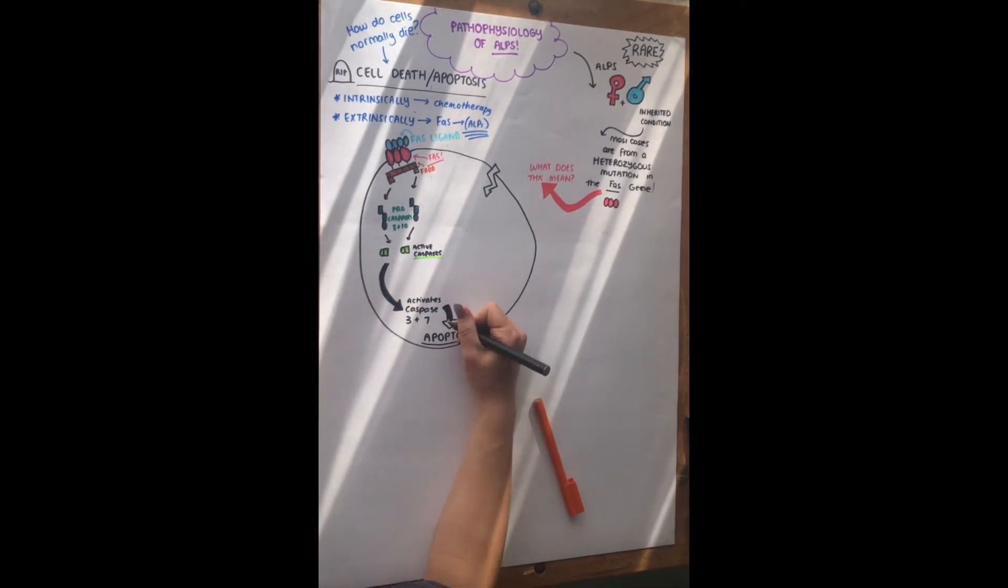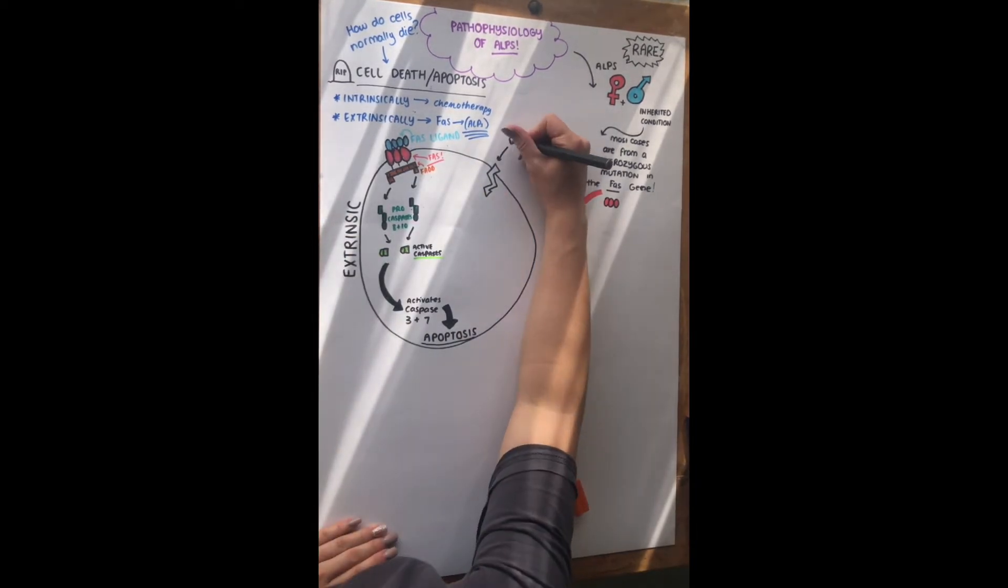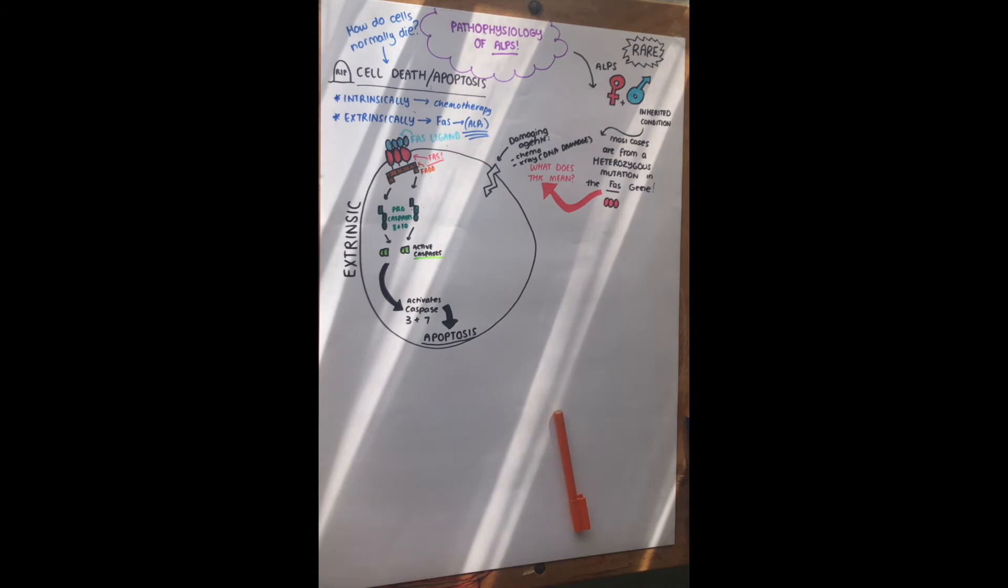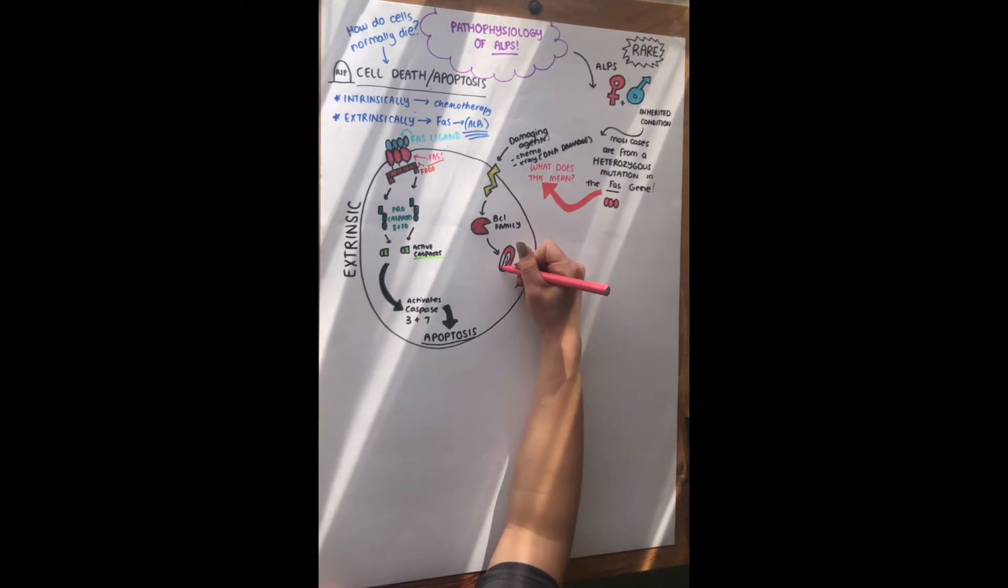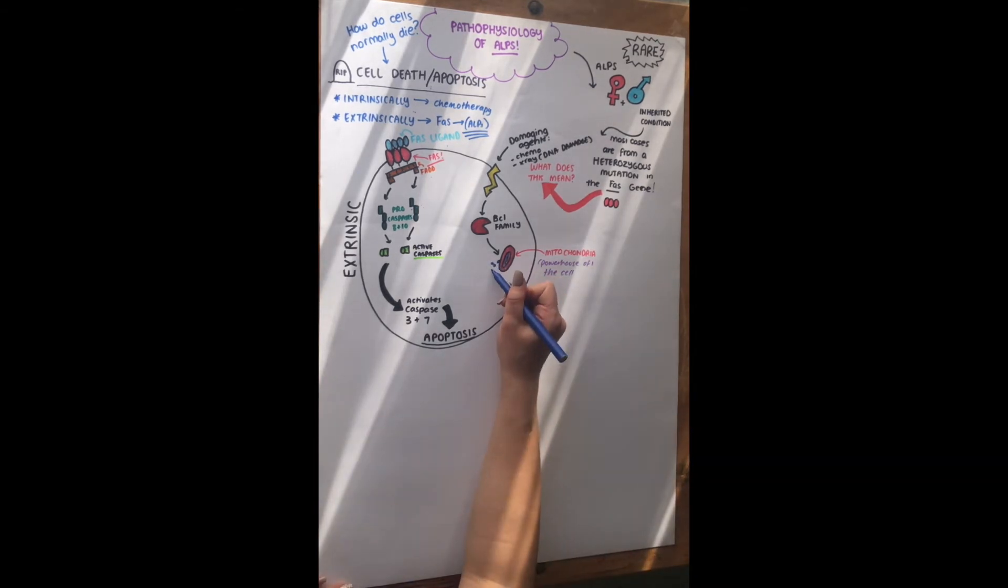And then we have the intrinsic pathway, which is damaging agents such as chemotherapy and x-rays, and that damages the cell. And what this does is it actually activates a family of proteins, and these are called the BCL family. There's a few other proteins that can be activated as well, but I'll just try and simplify it. And then you may have heard of the mitochondria, which is the powerhouse of the cell. This is the thing that we commonly learn in biology in high school. And what this does is it causes the mitochondria to release a little protein, and that little protein actually activates the Caspases as well. So then that also causes apoptosis. So that's called cytochrome C, and that activates the Caspases.